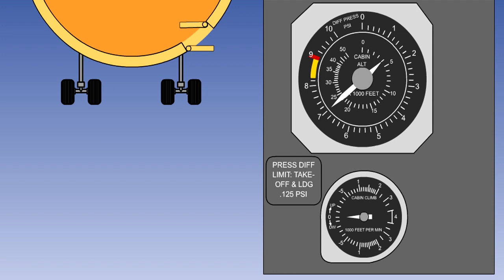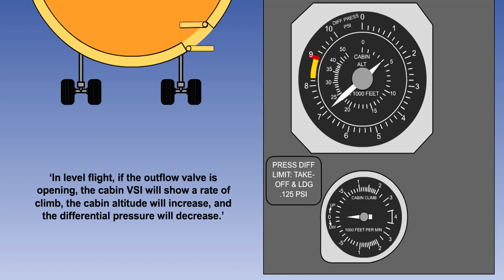That is the end of the lesson. You should now understand the relationship between cabin pressure, cabin altitude, and ambient pressure. Remember: in level flight, if the outflow valve is opening, the cabin vertical speed indicator will show a rate of climb, the cabin altitude will increase, and the differential pressure will decrease. If the cabin altitude reaches 10,000 feet, then an aural and/or visual warning will be given to the crew.